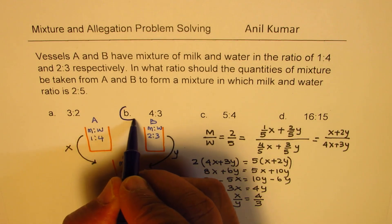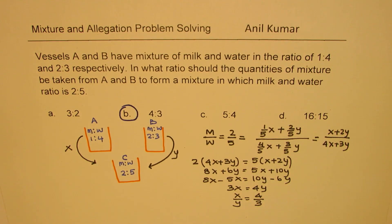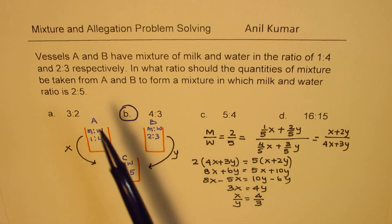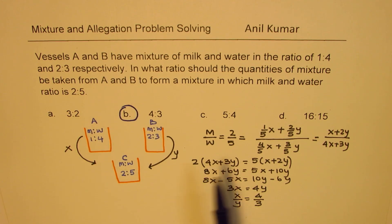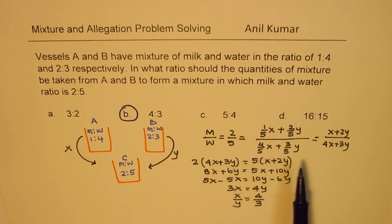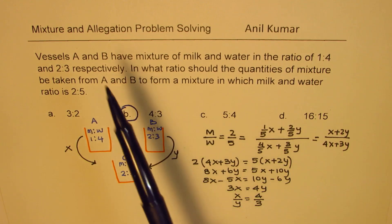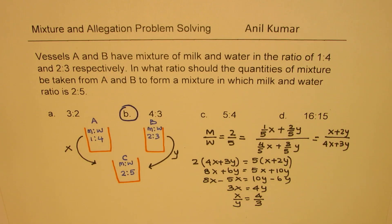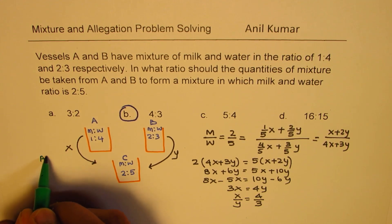So we get option B as the right answer — the ratio is 4 to 3. That is the standard method normally used to solve a mixture problem. This was simpler since the denominators were the same. Now let us look into the allegation method, which is the shortcut. I'll show you how this shortcut works on one corner of this page.